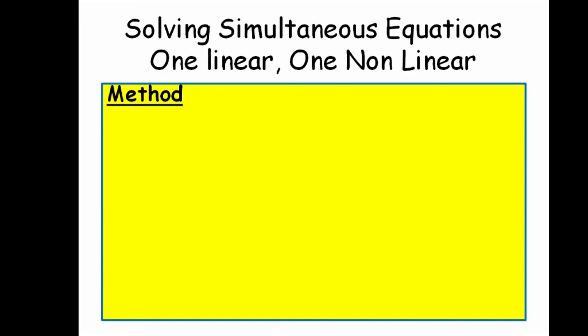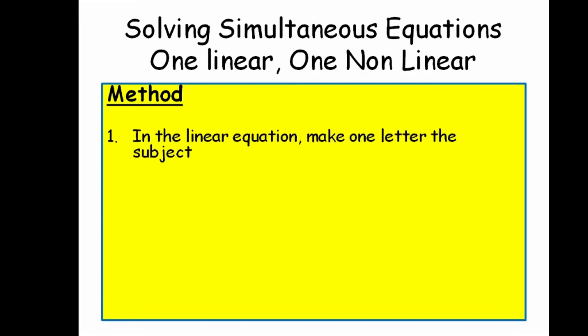Now let's look at the method of solving simultaneous equations when we've got one linear and one non-linear equation. The first step is to make one letter the subject in the linear equation. It doesn't really matter whether you make x or y the subject, but spot which is easier. Try and avoid fractions, try and avoid negatives where possible — keep the answer as simple as possible.